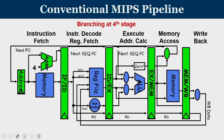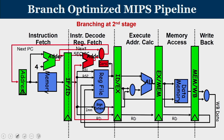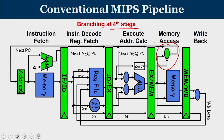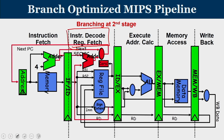Generally, branch resolution happens in the fourth stage; only then do we know whether to jump to the target instruction or continue with the adjacent instruction. However, an optimization can be made such that the branch is resolved in the second stage itself. If the branch is resolved in the second stage, only one instruction has entered the pipeline and flushing that one instruction is much easier. In the conventional approach, with branches resolved at the end of the fourth cycle, already 3 instructions are in the pipeline. If the branch outcome differs from expectation, 3 instructions must be flushed — a more complex task than flushing one.